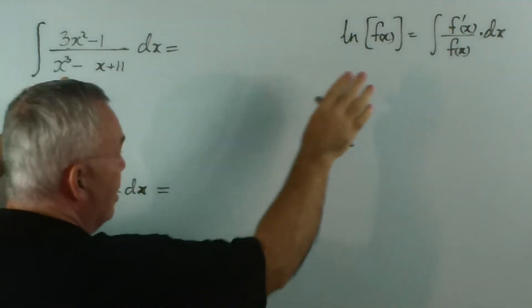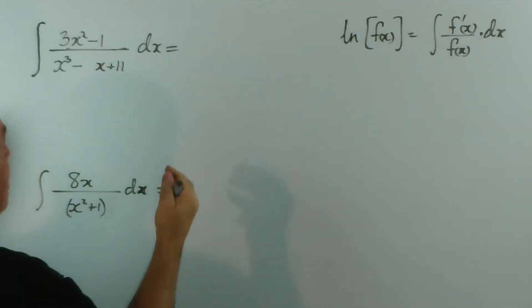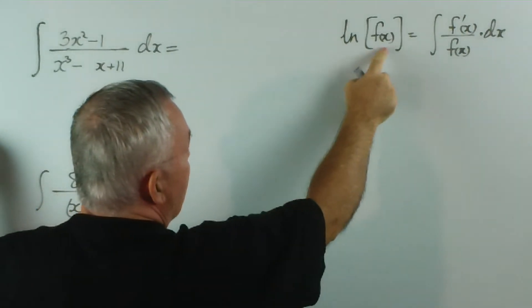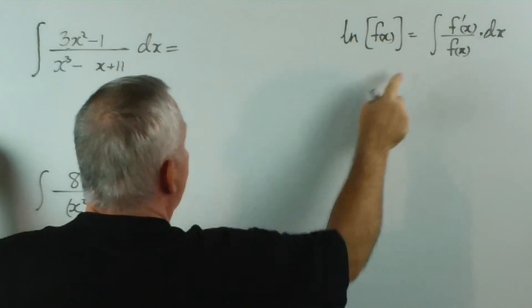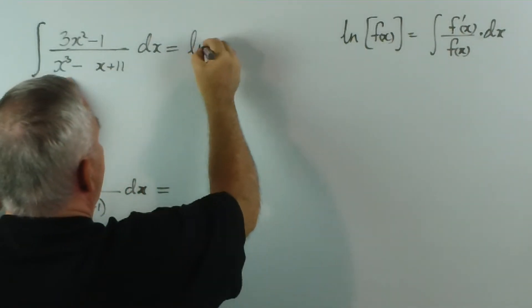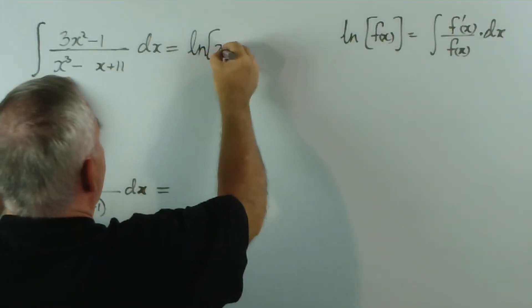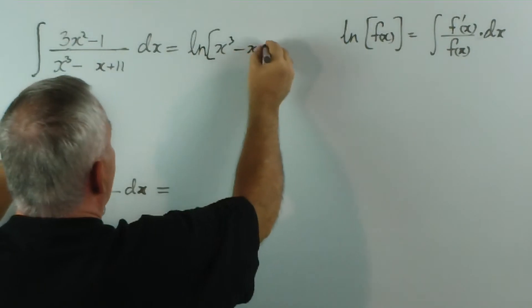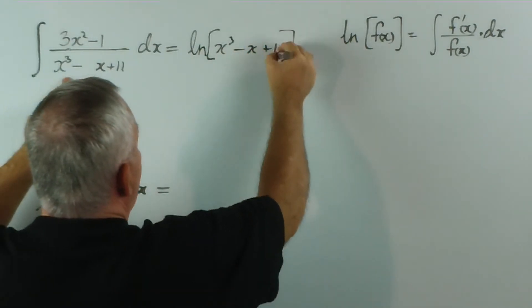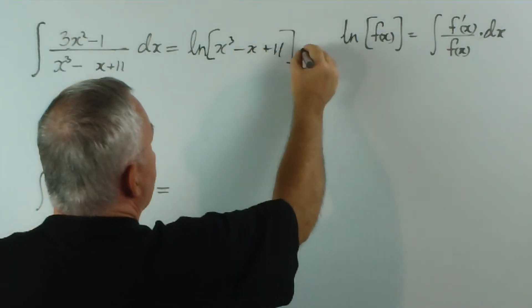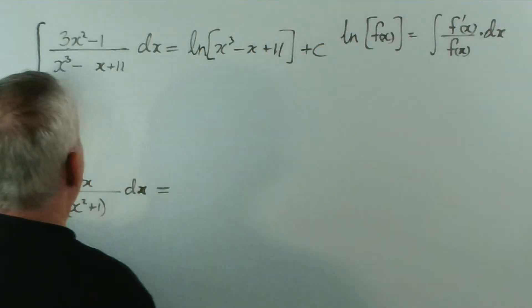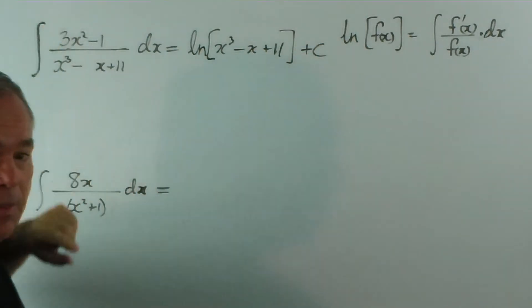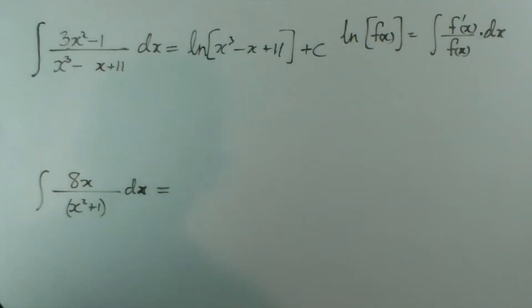This one, because it's exactly this pattern, we don't need to change. The answer is just the logarithm of whatever that function is on the bottom. So it's just the logarithm of x³ - x + 11 plus c, of course, because again, we don't have limits. This is an undefined integral.